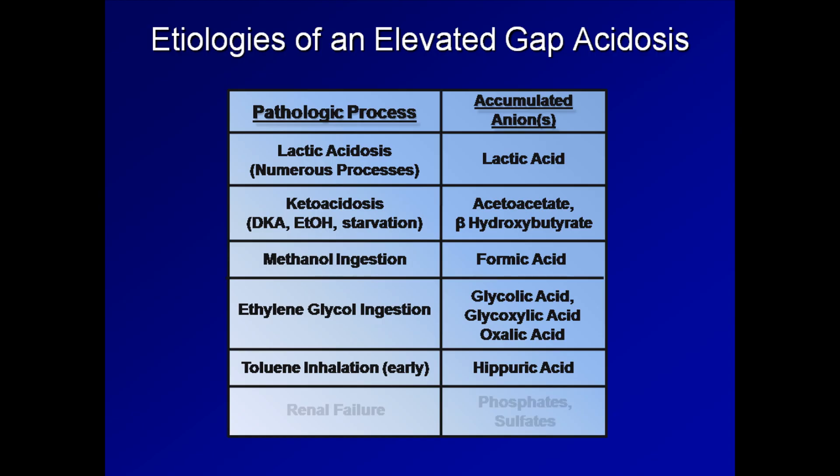Finally, the acidosis which usually accompanies renal failure is the only example of one which can have an elevated anion gap, but without the production of a new pathologic acid. Rather, as just mentioned, in renal failure a deficiency in excretion of phosphates and sulfates occurs, which contributes to the amount of unmeasured anions.